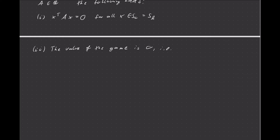In other words, the game is fair. So if you have a game specified by a skew-symmetric payoff matrix, you don't have to do any computation — you know right away that the game is going to be fair and the value is going to be 0. That makes the LPs a little easier because you know nu and mu already beforehand, and the objective function is always 0. You only have to find feasible strategies for that to work.